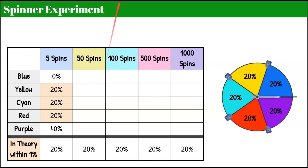In theory, we want each cell in our table to be 20%, because 20% of the time it should land on each color. We can see that in this conducted experiment, three of our colors worked out, but we didn't get any blue out of our five spins.